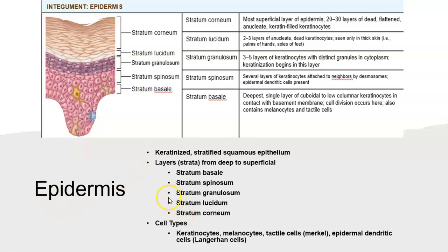Within these layers we have many different cell types: keratinocytes, melanocytes, tactile cells, and epidermal dendritic cells also known as cells of Langerhans. We're going to look at each one of these layers individually and talk about the cells and the importance of each.